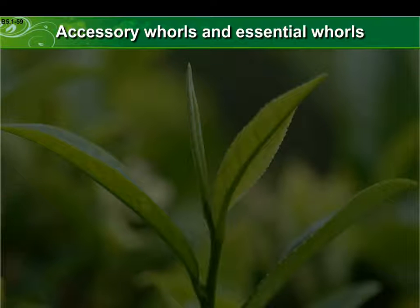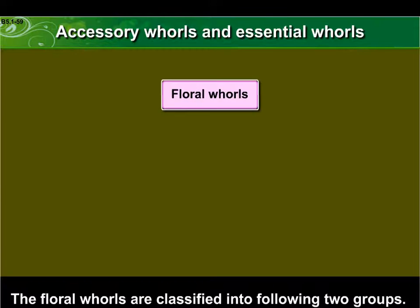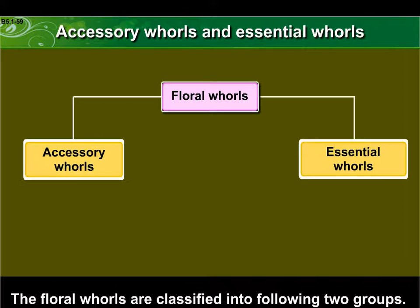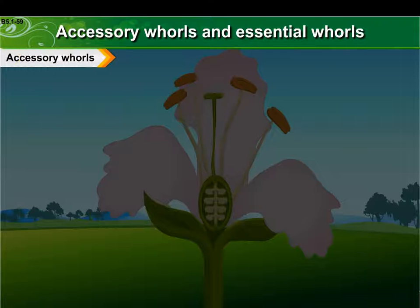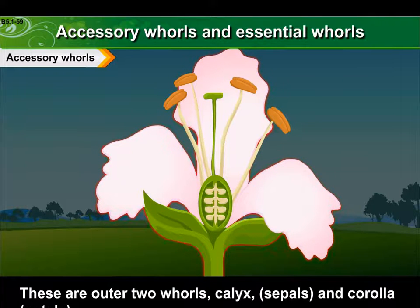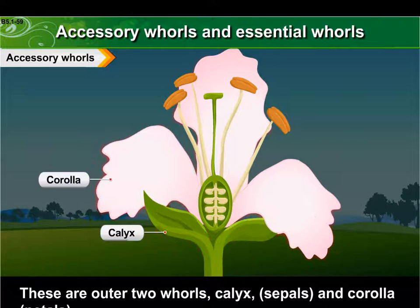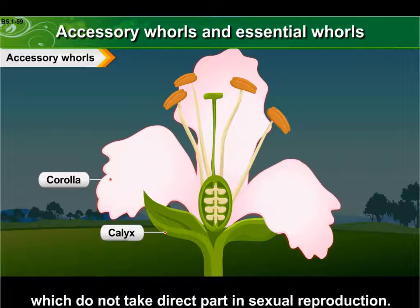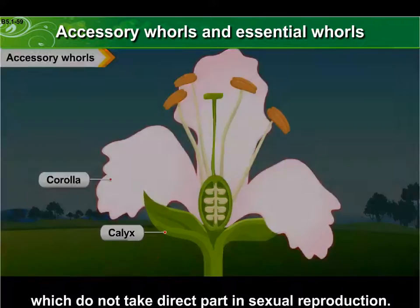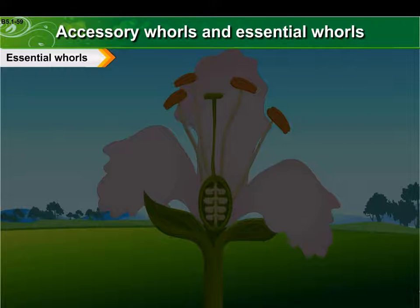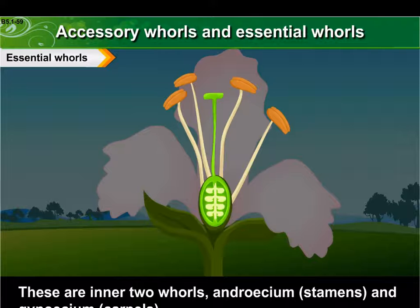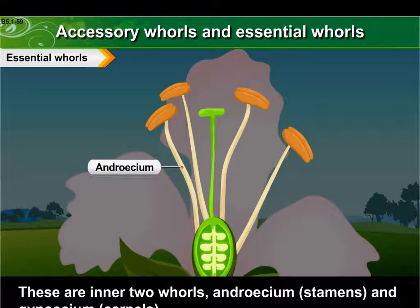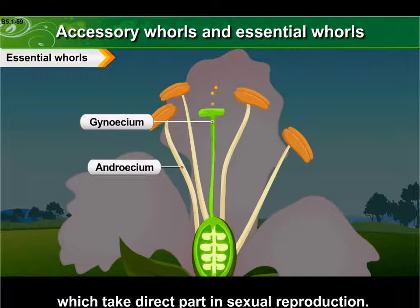Floral whorls are classified into two groups. One: accessory whorls — these are the outer two whorls, calyx (sepals) and corolla (petals), which do not take direct part in sexual reproduction. Two: essential whorls — these are the inner two whorls, androecium (stamens) and gynoecium (carpels), which take direct part in sexual reproduction.